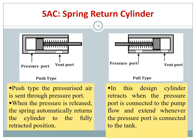The spring return cylinder is the typical single acting cylinder and comes in two types: push type and pull type. In the push type, pressure enters and the rod extends outward. In the pull type, the ports are switched, so when pressure enters the cylinder retracts — this is the opposite of the push type.